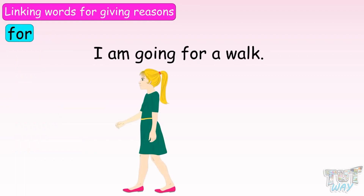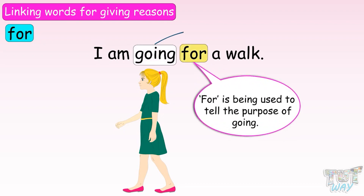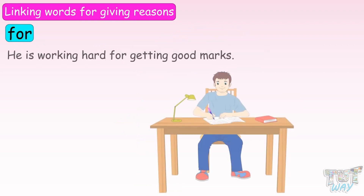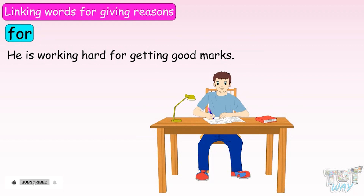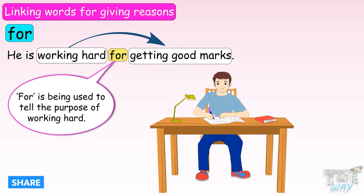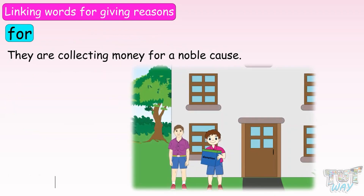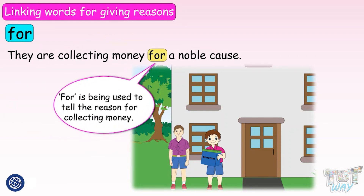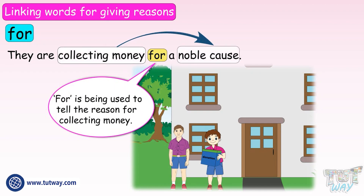For example: 'I am going for a walk.' Here, the linking word 'for' is being used to tell the purpose of going. 'He is working hard for getting good marks.' Here, 'for' tells the purpose of working hard. 'They are collecting money for a noble cause.' Here, 'for' is being used to tell the reason for collecting money.